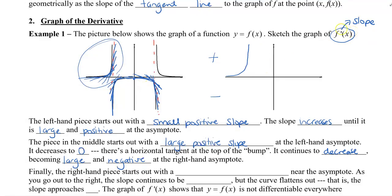Graphing that on the second graph: the piece in the middle starts with a large positive slope at the left-hand asymptote, decreases to 0 at the top of the bump on the y-axis — that gives a slope of 0. Then after 0, the slope is small and negative, and gets very large and negative. The bottom half of our graph represents the negative slopes, so it's small and negative, then becomes large and negative.